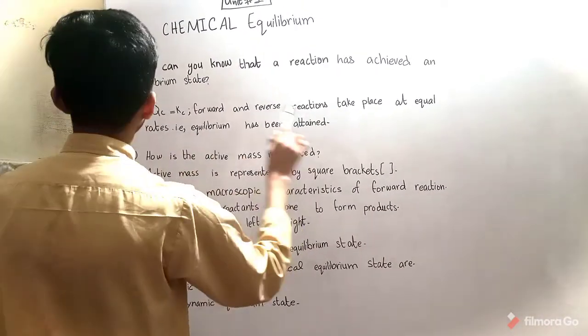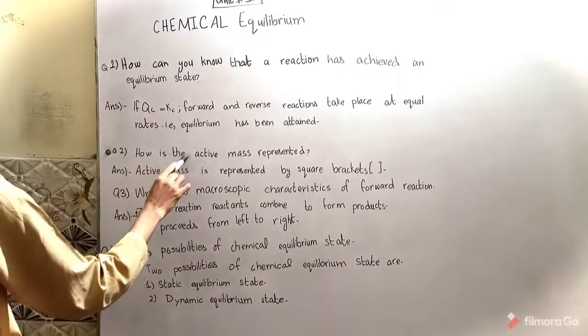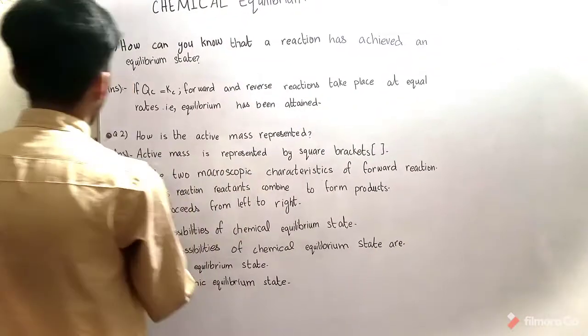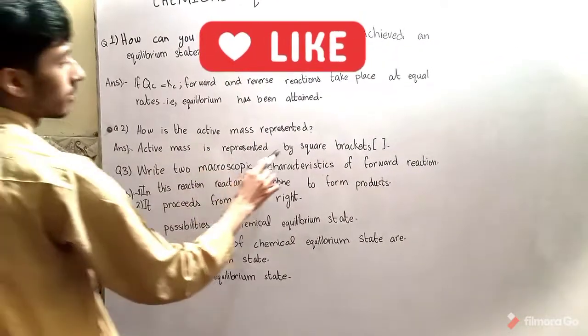Question number two: How is the active mass represented? Answer: Active mass is represented by square brackets.